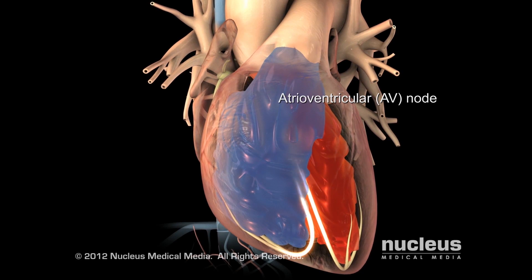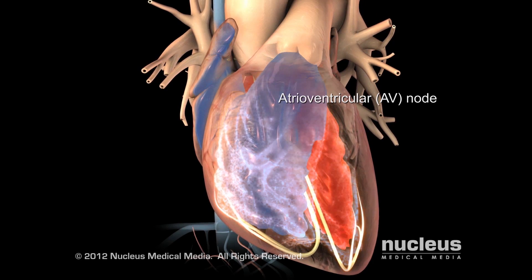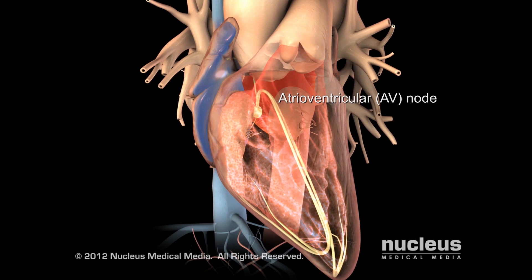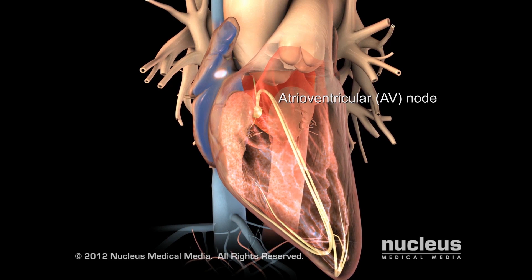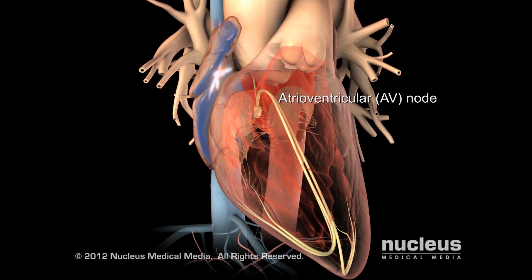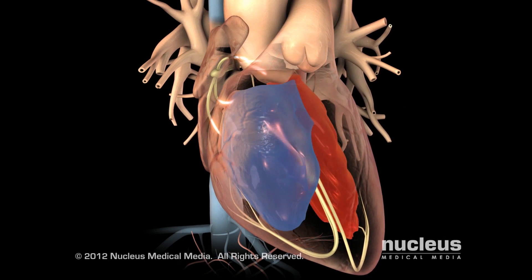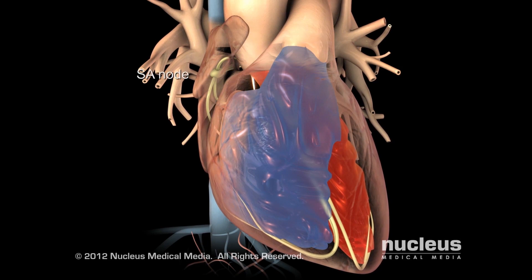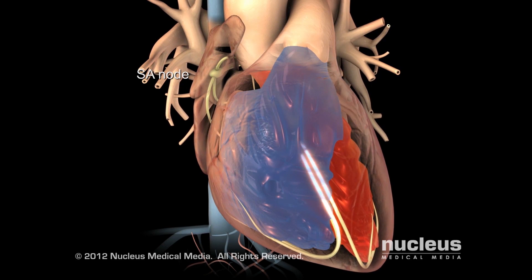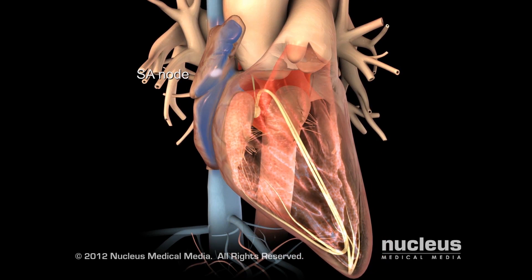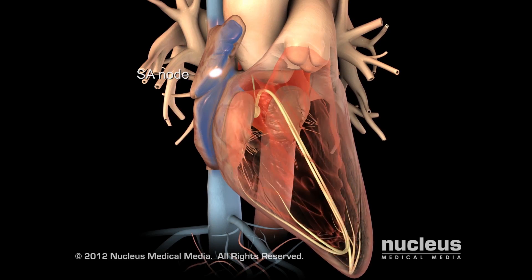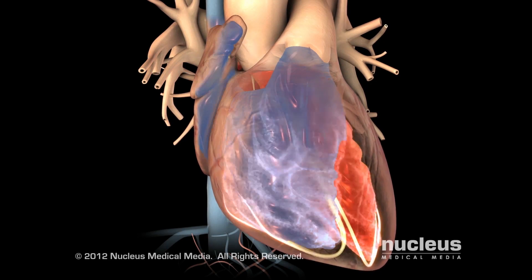The impulse then travels down to the atrioventricular node and through the bundle of His to the ventricles via the right and left bundle branches. This causes the muscle of the ventricle to contract and pump blood to the lungs from the right side of the heart and to the rest of the body from the left side of the heart. This is how the heart beats effectively.